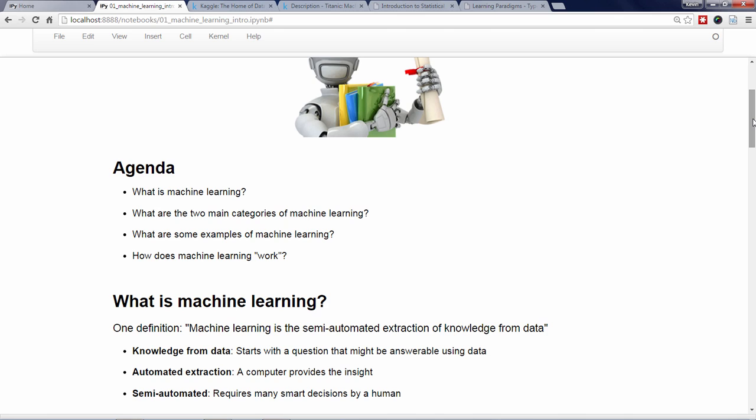Third, machine learning is not a fully automated process. As any practitioner can tell you, machine learning requires you to make many smart decisions in order for the process to be successful. We'll cover many of those decisions throughout this video series.